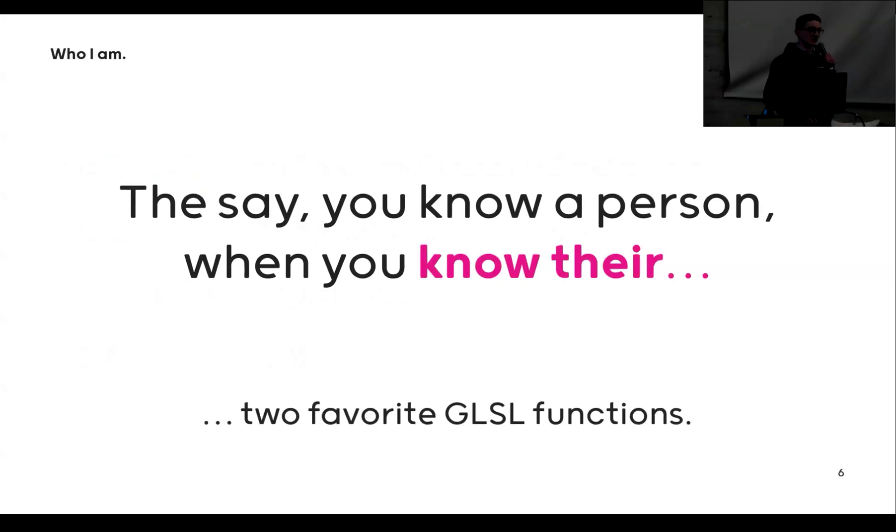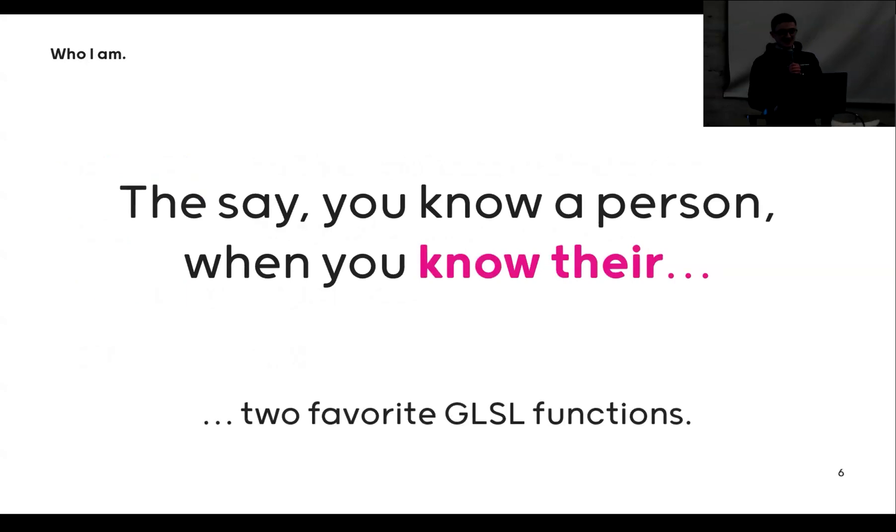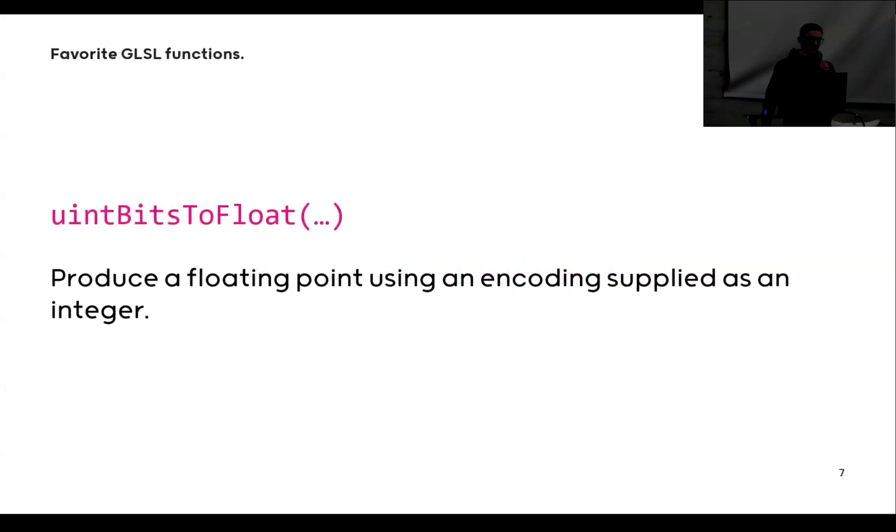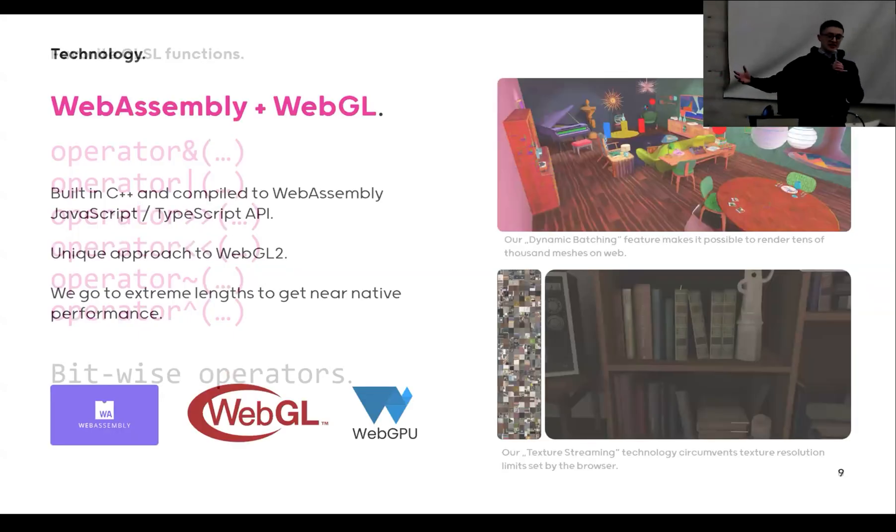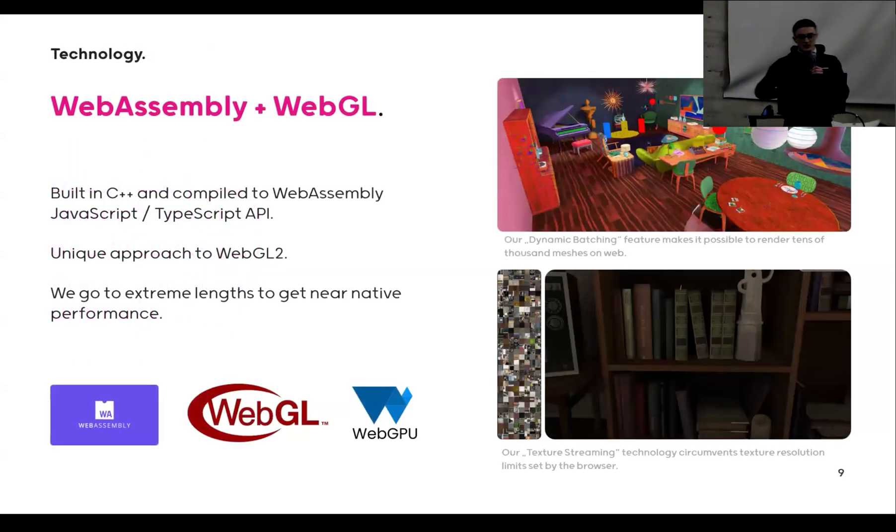They say you know a person when you know their two favorite GLSL operators: uintBitsToFloat, which produces a floating point from a uint, and the second one are all the bitset operators. Which also shows you I don't really accept limitations, and that's also a mindset that we put into the engine, where we try to squeeze every bit of WebGL and use WebAssembly to get all the performance we can out of the browser and go to very extreme lengths.